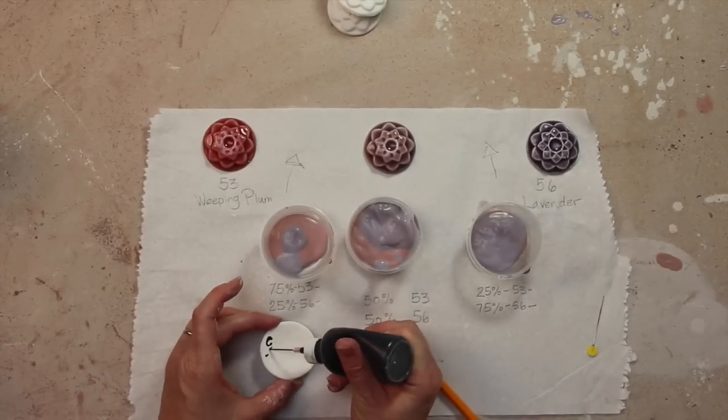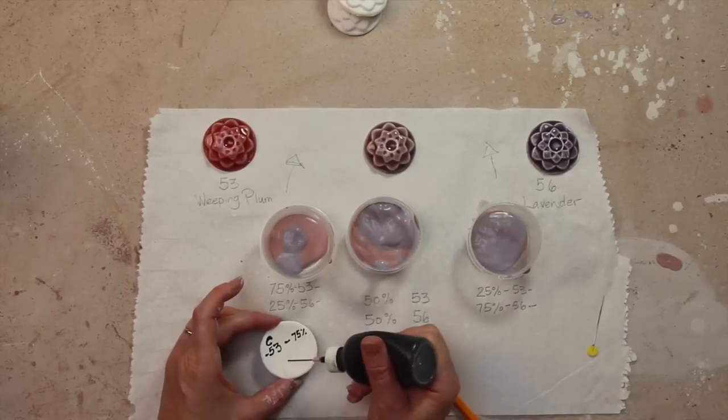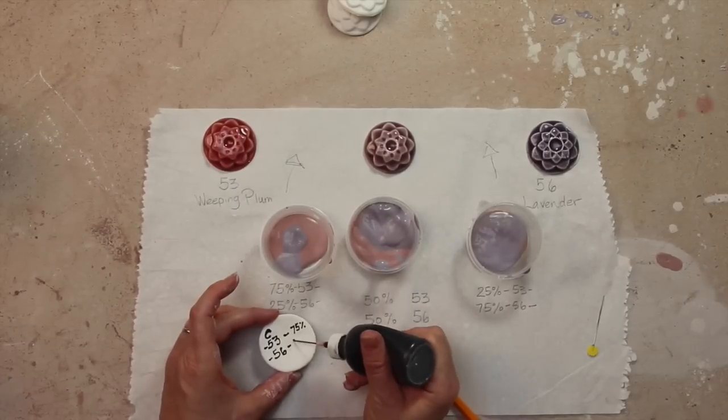Make sure to label your test tiles before firing as well, so you can remember and record your results. I use Amoco Velvet Underglaze to label mine.